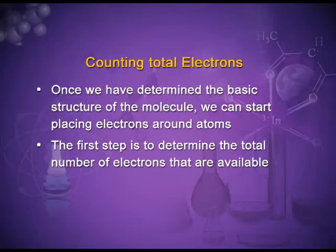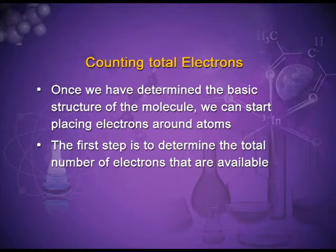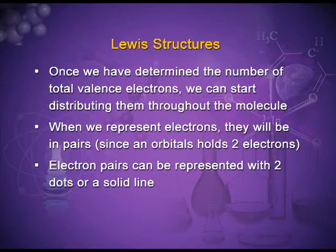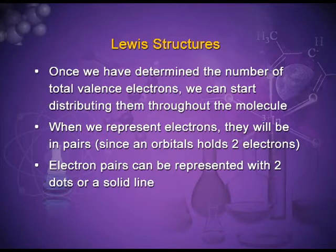To revise: once we determine the basic structure of the molecule, we start placing electrons around atoms. The first step is to determine the total number of available electrons, using the group number to find how many valence electrons each element contributes — for example, oxygen in Group 6A contributes 6 electrons. Once the total valence electrons are determined, we distribute them throughout the molecule. Electrons will be in pairs since an orbital holds 2 electrons; electron pairs can be represented with two dots or a solid line.